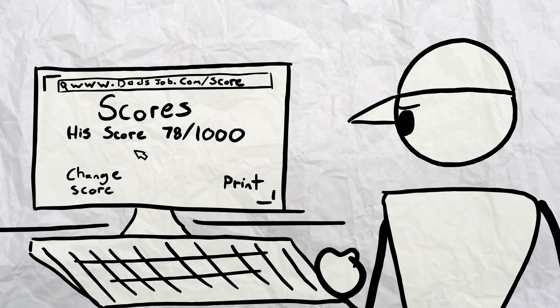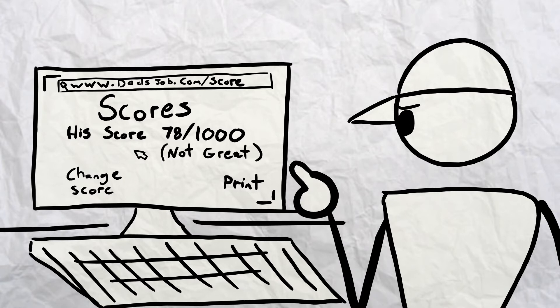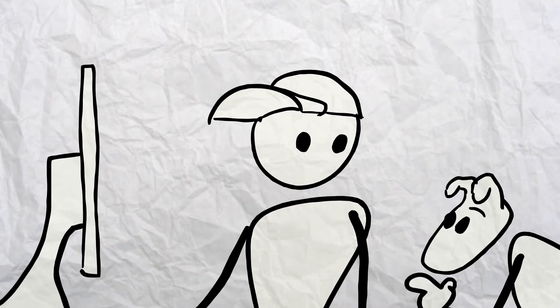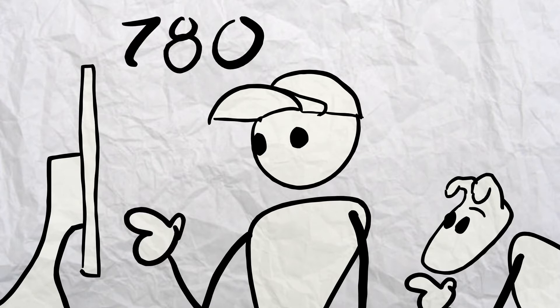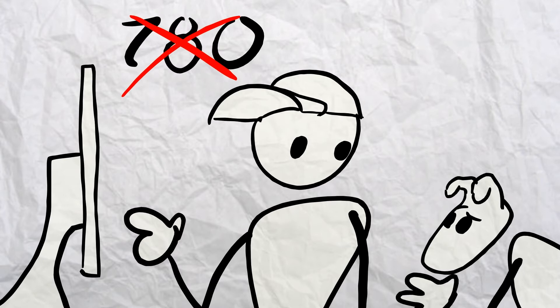Your dad got a 78 out of 1000. Now I'm only six, I'm probably not great at math, but I'm gonna go ahead and assume that that's not great. The dog goes why don't we just change his test scores. I'll just make it 780. No, why don't you make him a genius, make him 1001.